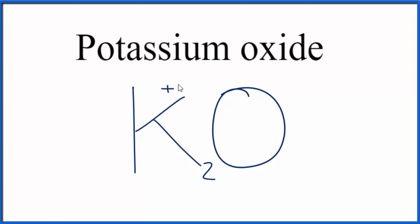We remove our charges, and we get the same answer, K2O. So the correct formula for potassium oxide is K2O.